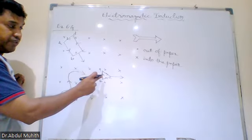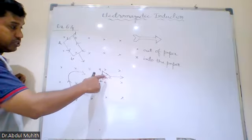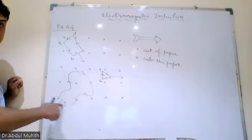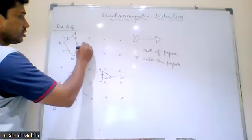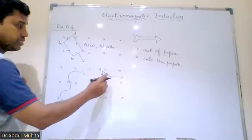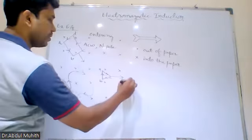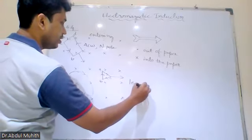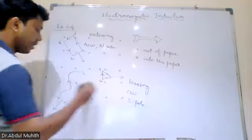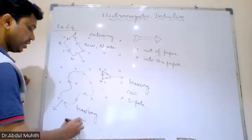This one is leaving the magnetic field. So a South pole will be formed — clockwise. This is also leaving — clockwise. Here it is anticlockwise, and a North pole will be found because it is entering. And if it is leaving, what will happen? Clockwise and a South pole is found. Similarly, this also is leaving the magnetic field, so clockwise and a South pole is found.